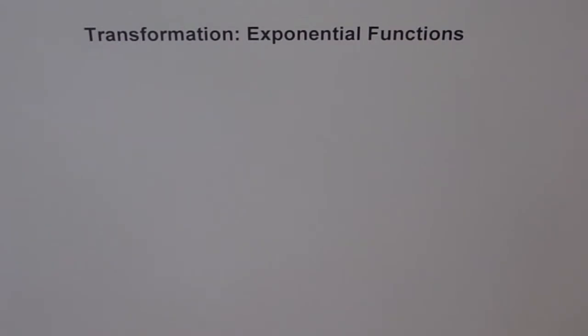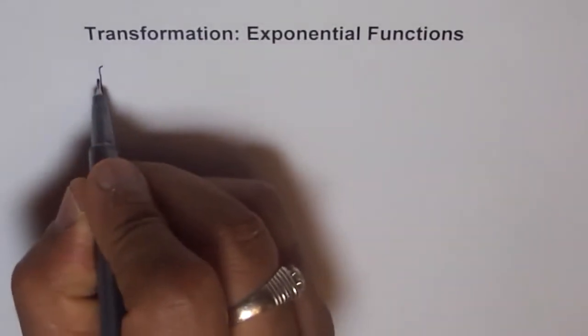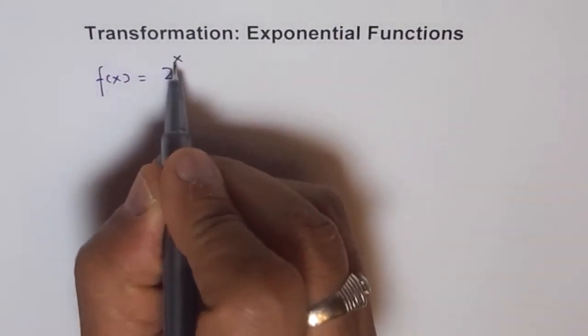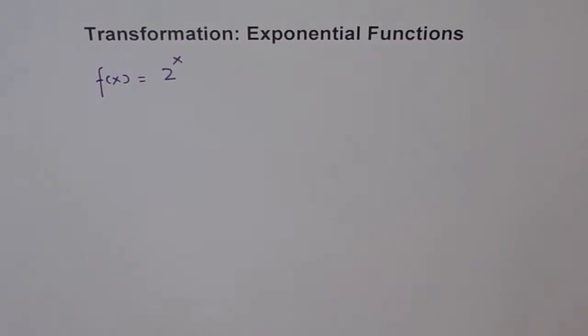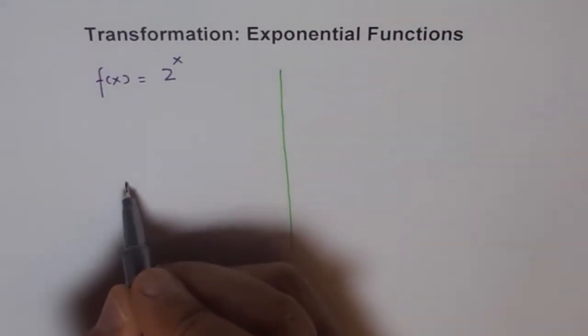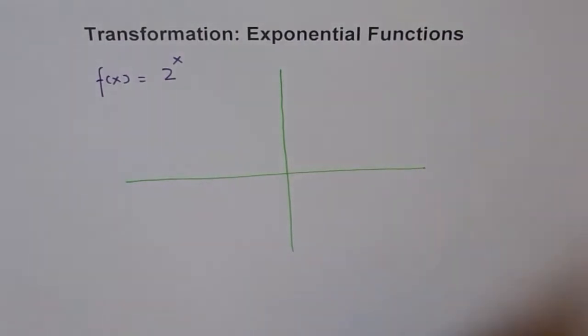Let's try to understand transformation for exponential functions — what points are important and how we should really do transformation of exponential functions. We'll take a parent exponential function f(x) = 2^x as an example. Let's start with our coordinate system.